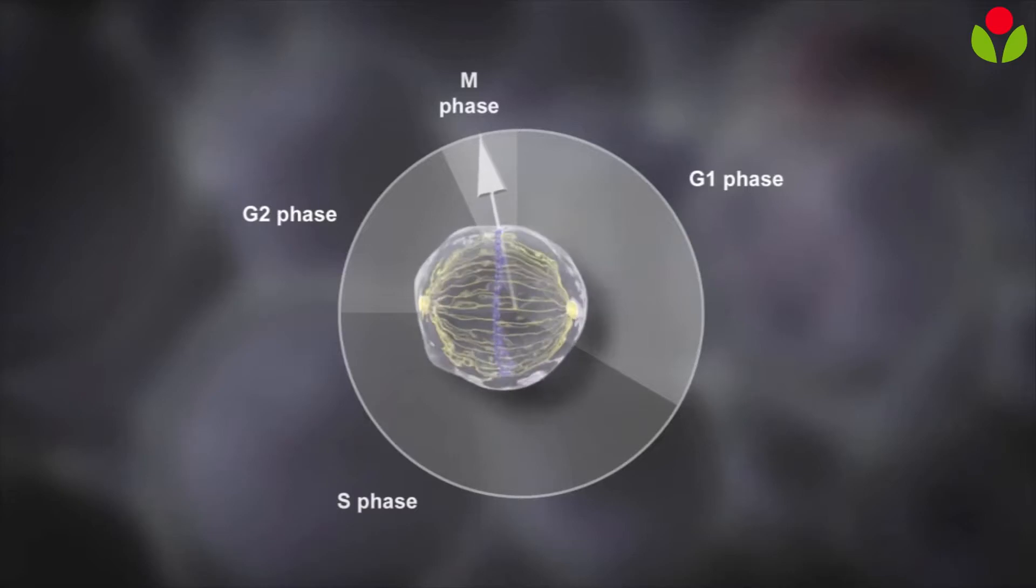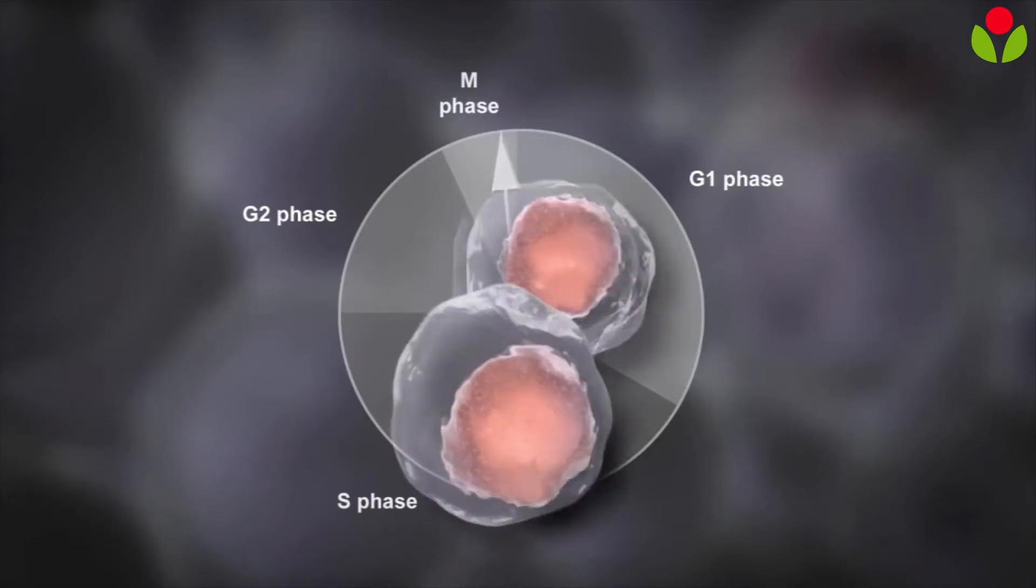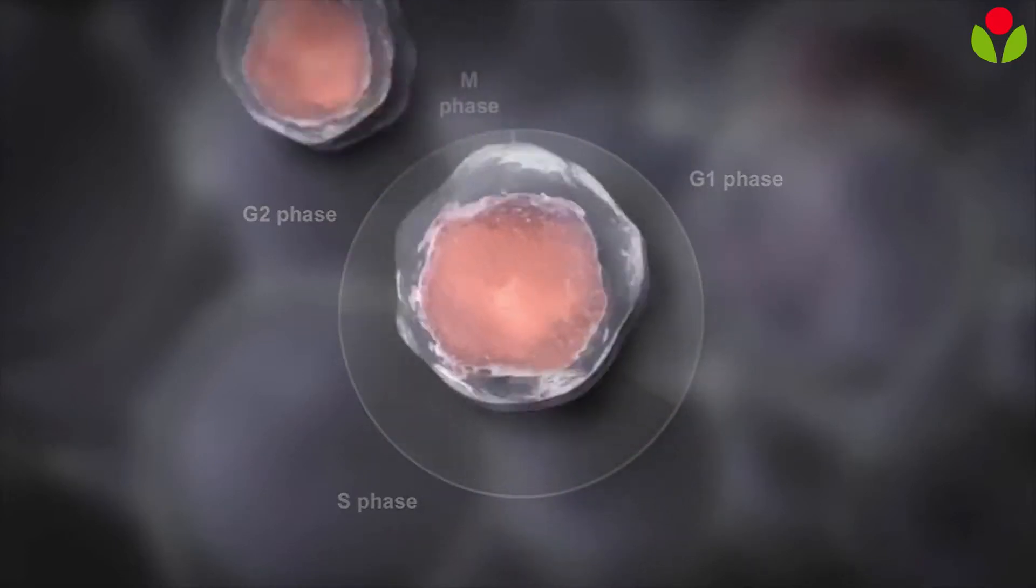This is called the M phase or mitosis. This completes the process of cell division.